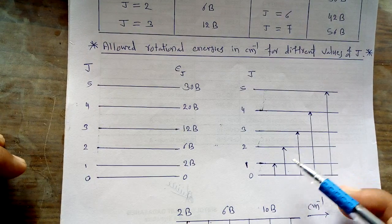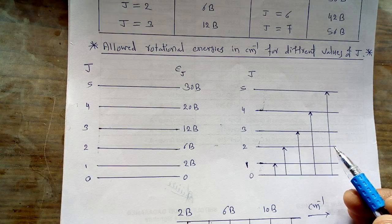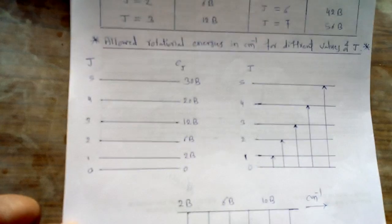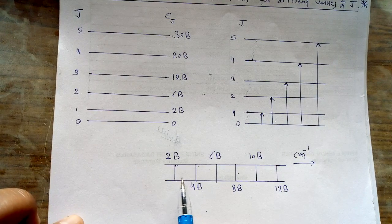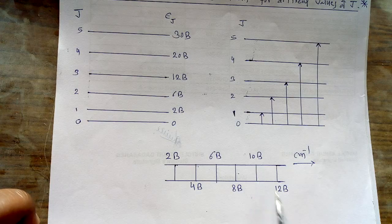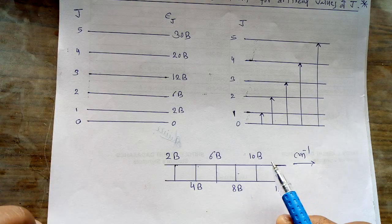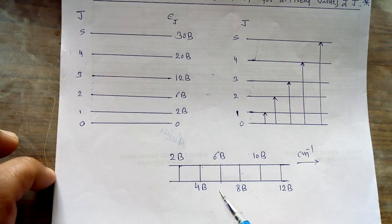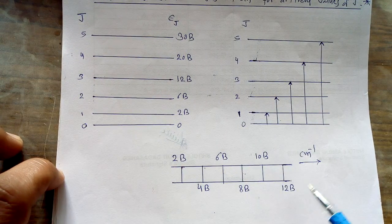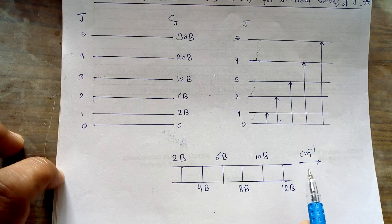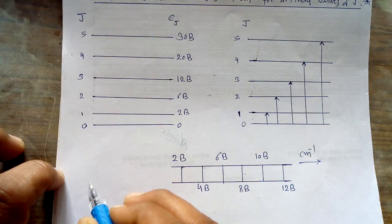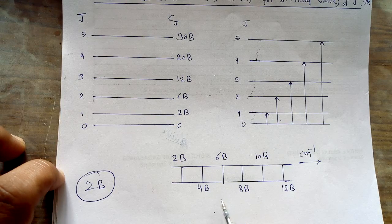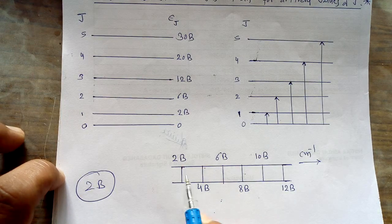The transition from J = 0 to J = 2 is the second possible transition. In this way, all possible transitions for a rigid diatomic molecule for different values of J are shown. The spectrum for this molecule contains different absorption lines at 2B, 4B, 6B, 8B, 10B, and 12B. Looking at these values in per centimeter, the difference between any two adjacent lines is 2B.